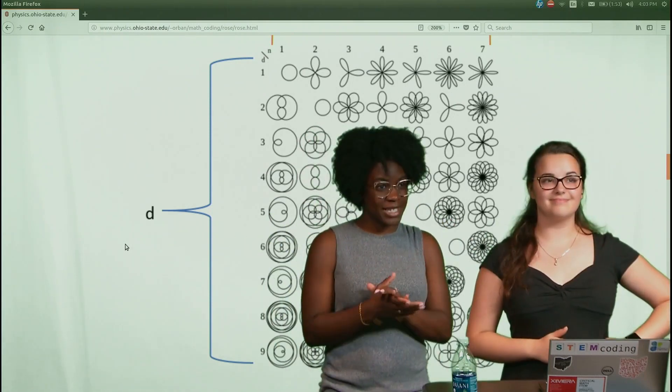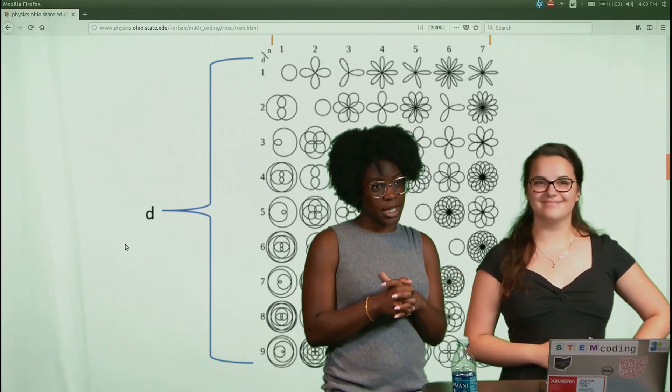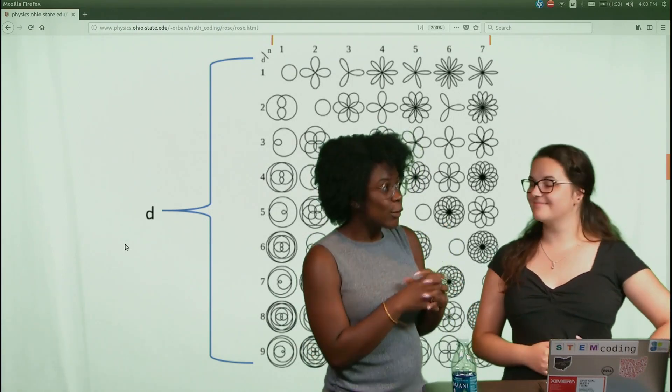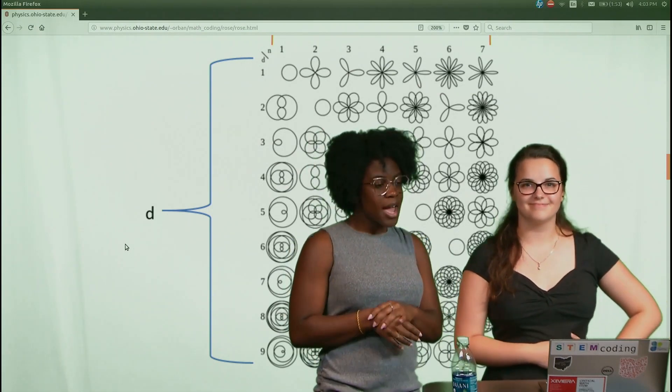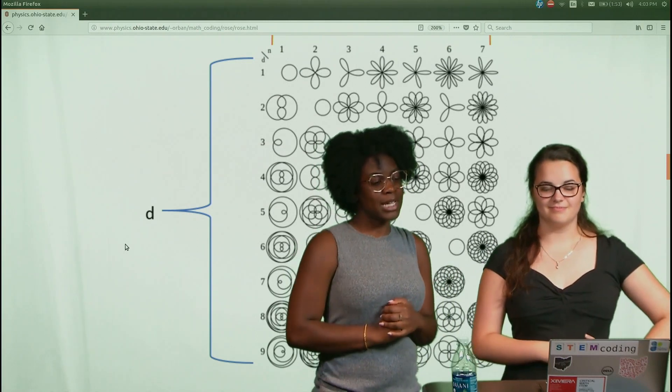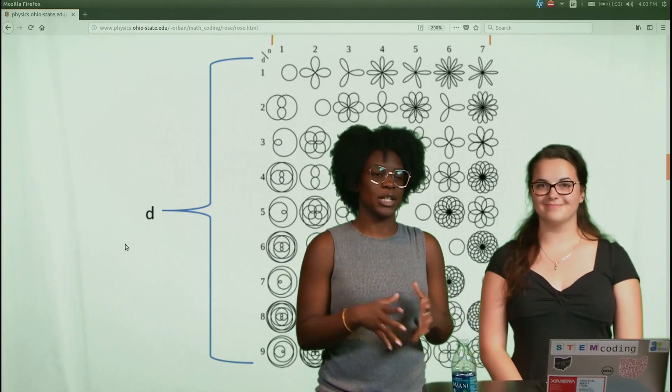So we got this activity from a lovely person named Dan Schiffman and he is in charge of the Coding Train YouTube channel. You guys should definitely check him out. He has a lot of cool stuff there. And so this is kind of like our take on the mathematical flower activity that he did. We kind of took it and made it just a little bit more simpler for everyone to understand.